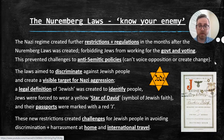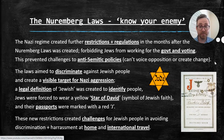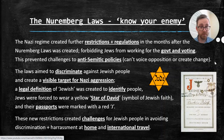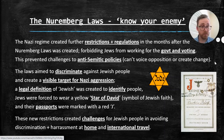The laws also aimed to discriminate against Jewish people and, importantly, create a visible target for Nazi aggression. Because if you're walking down the street, you don't know if someone is Jewish — unless a bright gold star is put on their clothing saying 'I am Jewish.' So a legal definition of 'Jewish' was created to identify people. Jews were forced to wear a yellow Star of David, a symbol of the Jewish faith — very demeaning to have that symbol turned against them as a negative connotation. Even their passports were marked with a little red J.